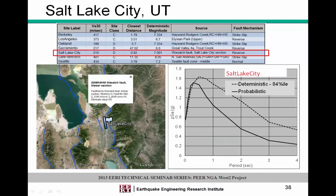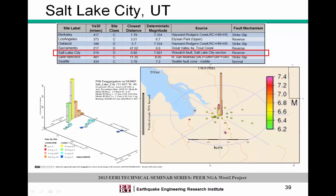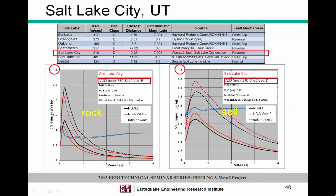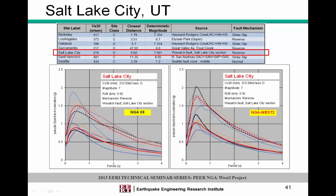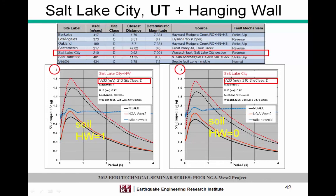Salt Lake City is a different case because it's a reverse fault — the Wasatch Fault — that comes into play. Without considering hanging wall effects, we would see a decrease in spectral accelerations for a rock site and a roughly constant or slight increase for a soil site. But when we turn on the hanging wall effects, there's definitely an increase in both the rock and soil conditions.